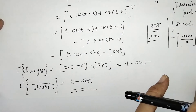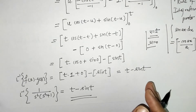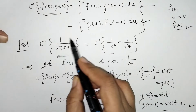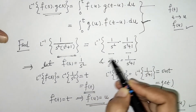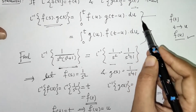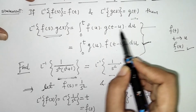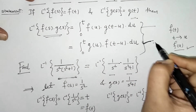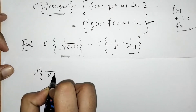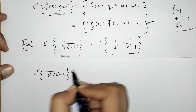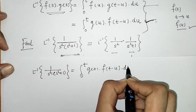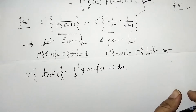Now let's verify using the second integral form. We check: L⁻¹{1/(s²·(s² + 1))} using the integral of g(u)·f(t - u) du from 0 to t. We already know g(t) = sin(t) and f(t) = t.